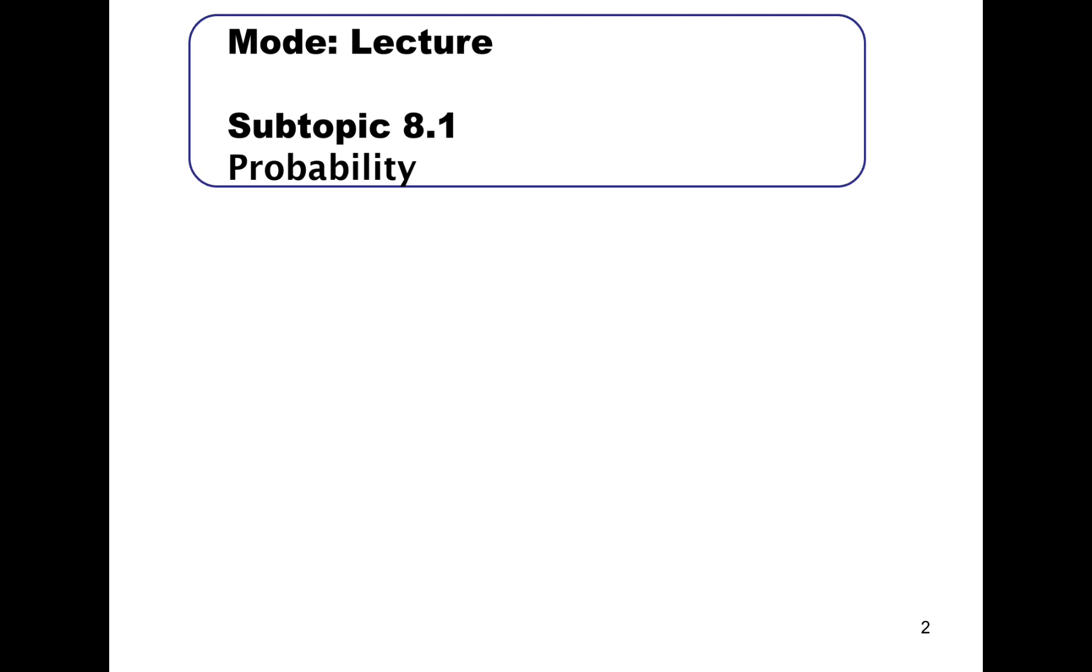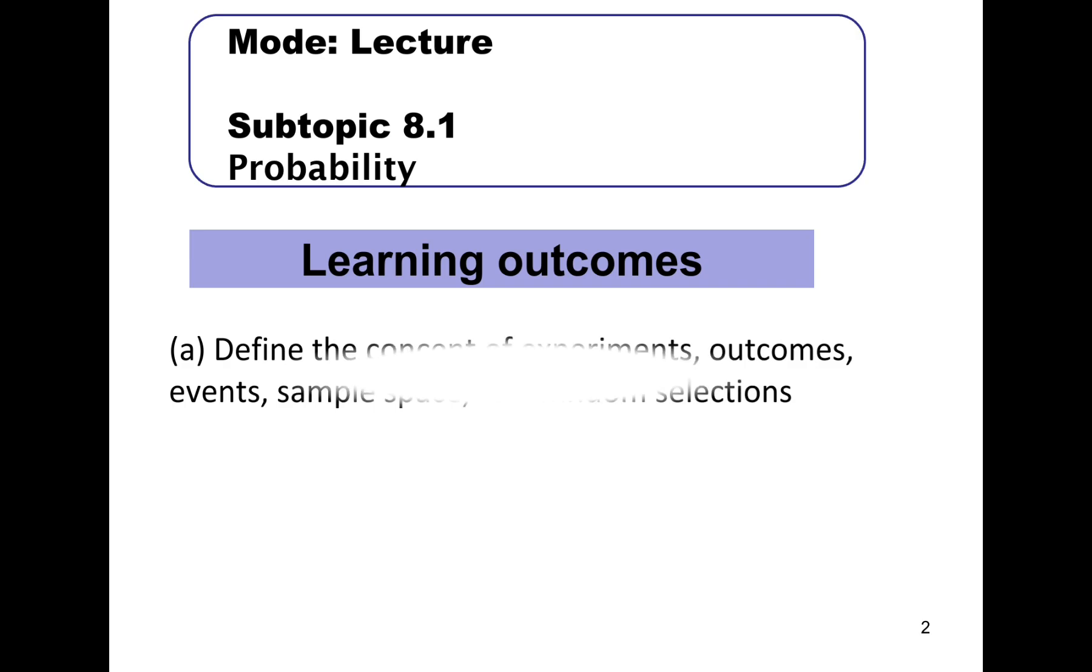For our first subtopic, 8.1, learning outcomes are: define the concept of experiments, outcomes, events, sample space, and random selections. And for the second one, state the basic laws of probability.